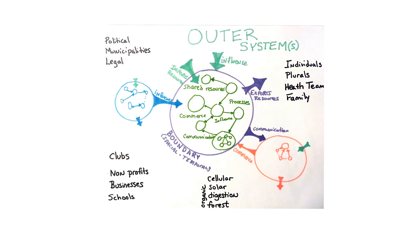Here on slide number two we are featuring a single system inside the purple boundary. This is not just a plural system or any specific kind of system — this is describing the whole concept of what a system is. A system has a boundary separating it from the outer system, and that boundary also separates it from these other two systems off on the sides.